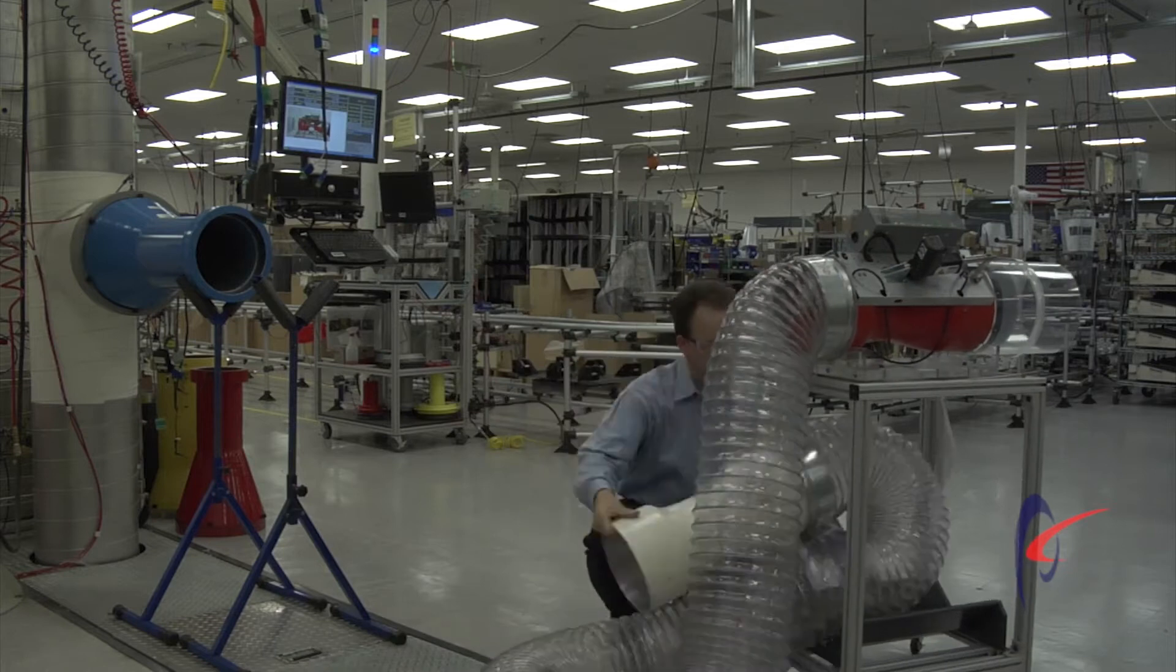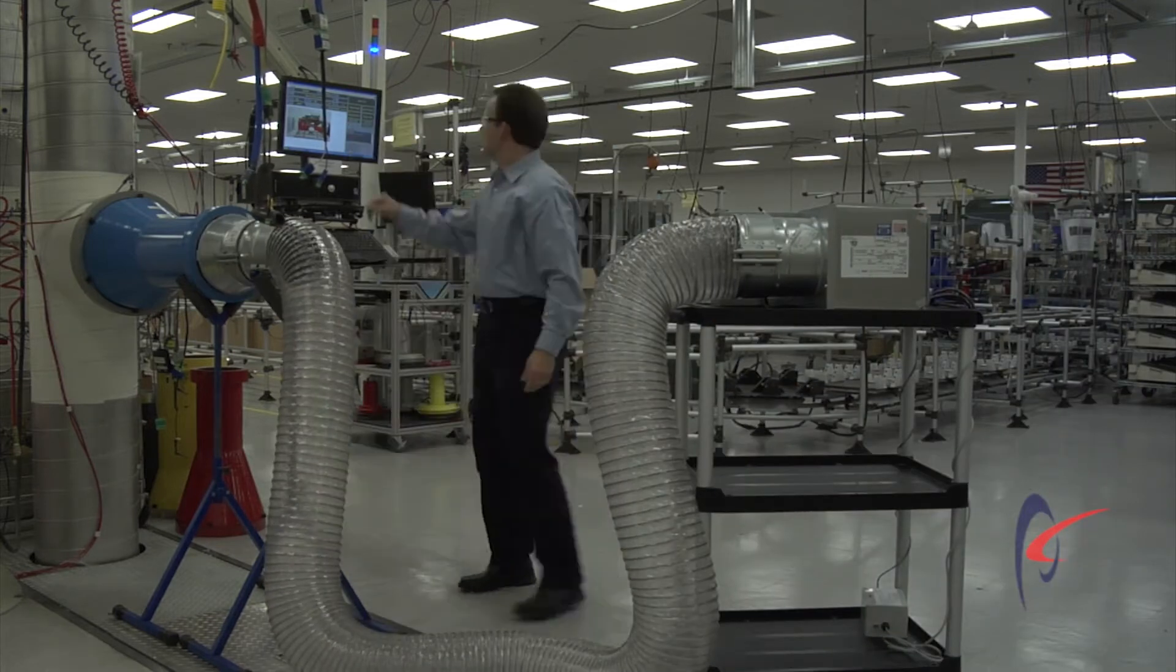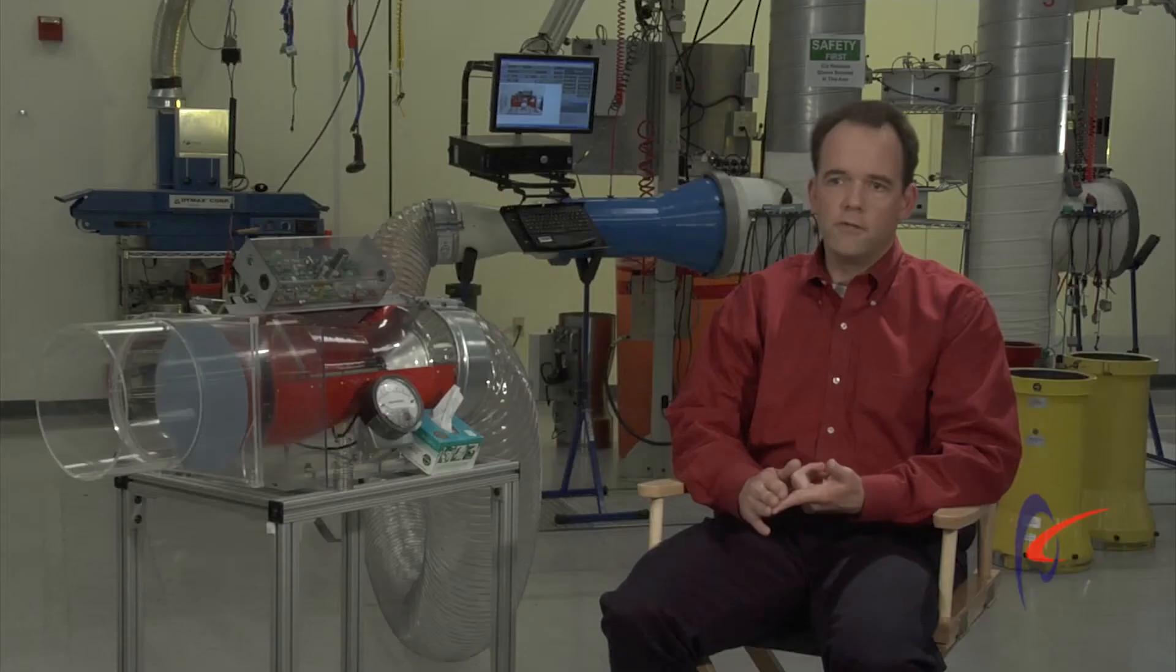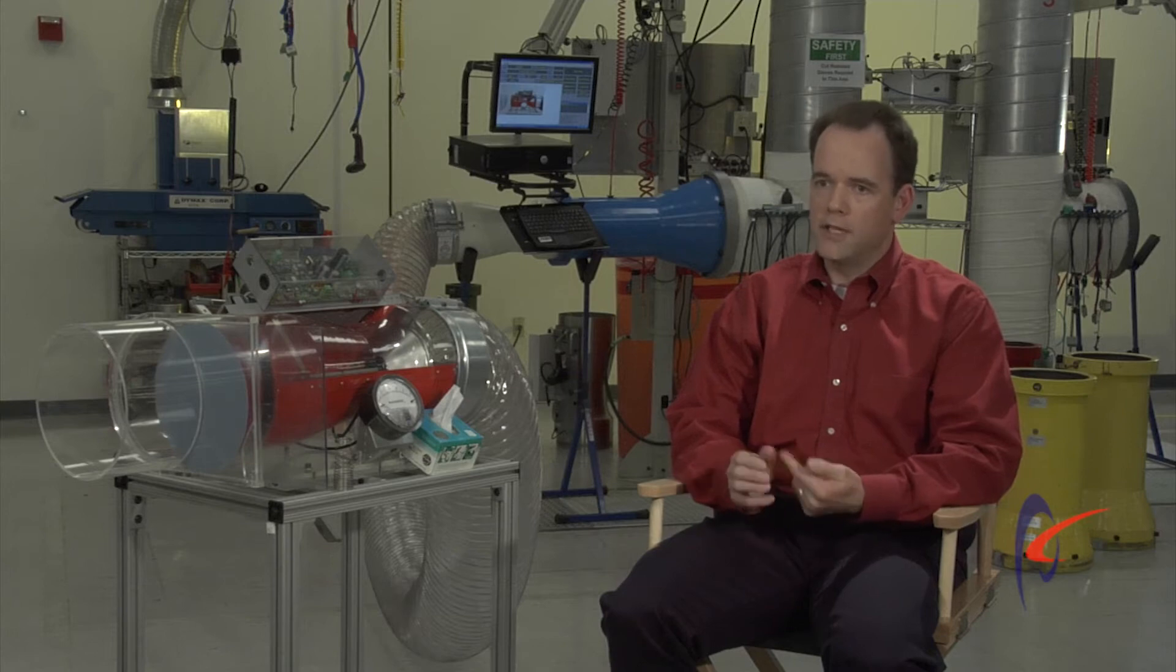When a variable air volume terminal unit is connected to our air station, or VAV box, as it's commonly called, they measure flow. They're not mechanically pressure-independent like the Phoenix valve. Any change in pressure drop is then a change in flow. It has to measure that change. The controller then has to move the actuator. That takes time. You could lose room pressurization. You could lose fume hood containment. There's also inaccuracy with that.